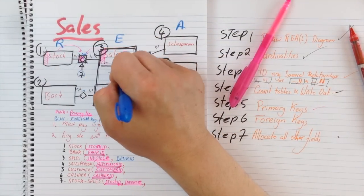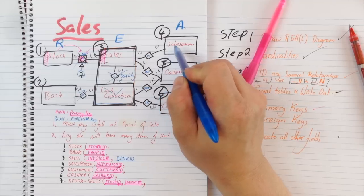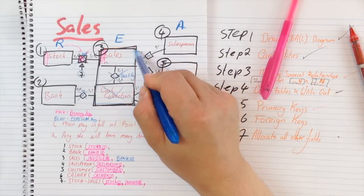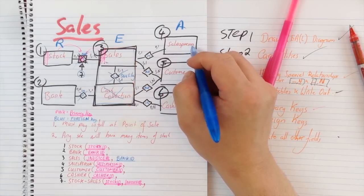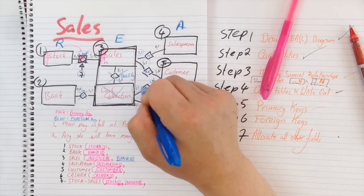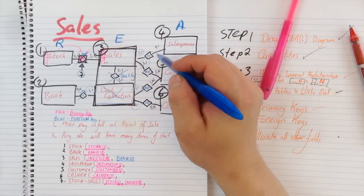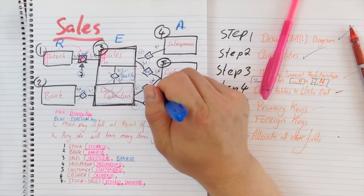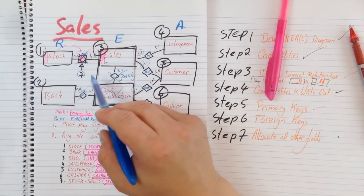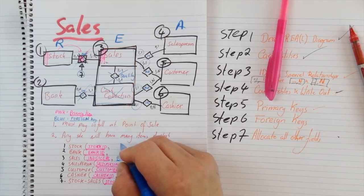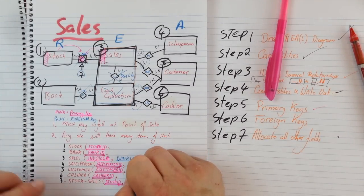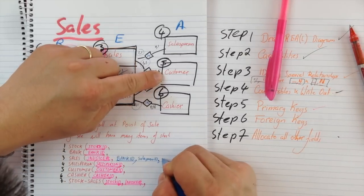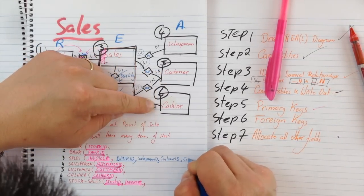Now I need to think about the sales and salesperson relationship. Every time we issue an invoice we know that we are going to have one and only one salesperson. The hint here is that when you see a one-to-one relationship on this side, the primary key of that table gets pulled into the sales table as a foreign key. So the sales table is going to include the bank ID — we have that — it's now going to include the salesperson ID, we're going to include the customer ID, and it is also going to include the cashier ID. I should do these in consistent colouring.